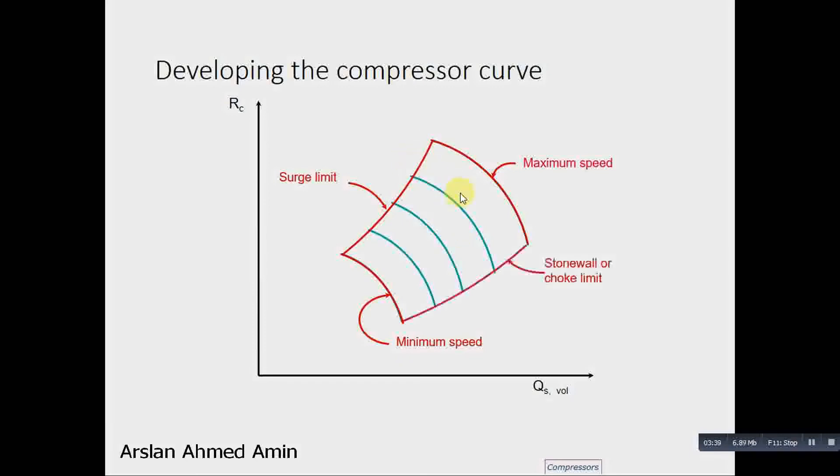And this flow is the maximum flow. This is known as stonewall or choke limit. Beyond this point, the flow does not remain stable in the compressor. And this is also a power limit imposed on the overall power of the system.